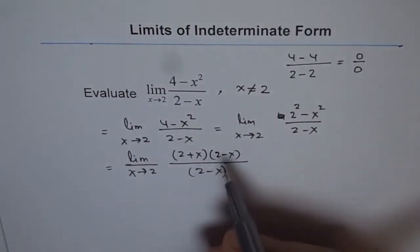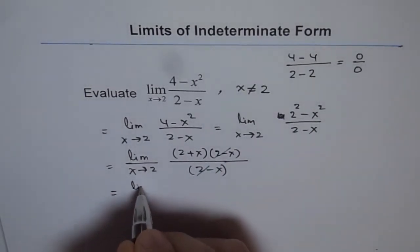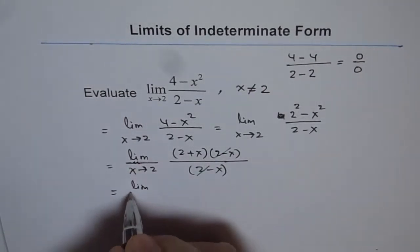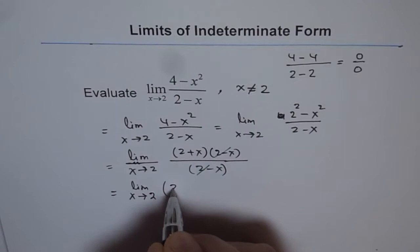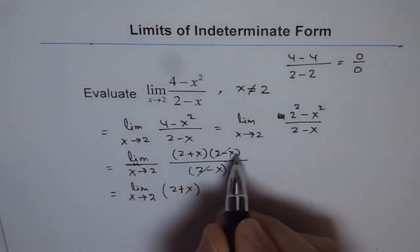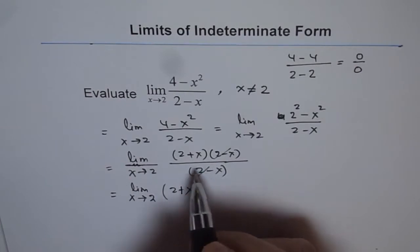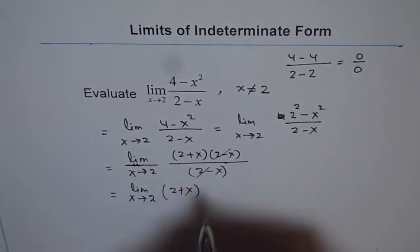Now here you can see this factor 2 minus x. This can be cancelled and we can simplify our function. So we get limit x approaches 2 and we get 2 plus x. Because 2 minus x got cancelled, we are left with 2 plus x. Now we can substitute 2 and get our answer.